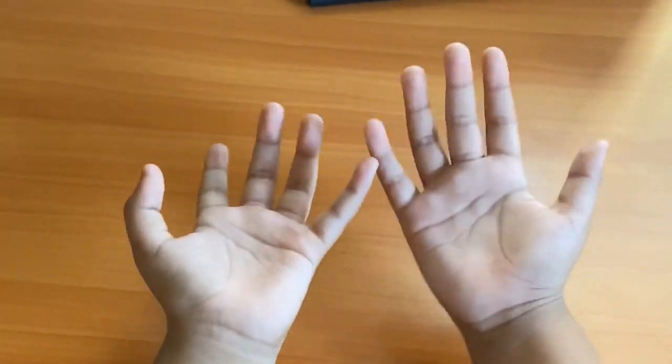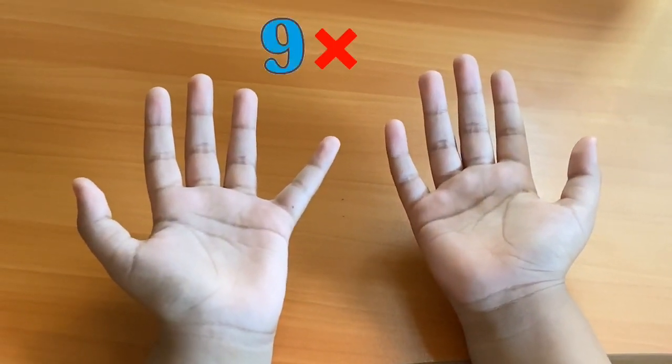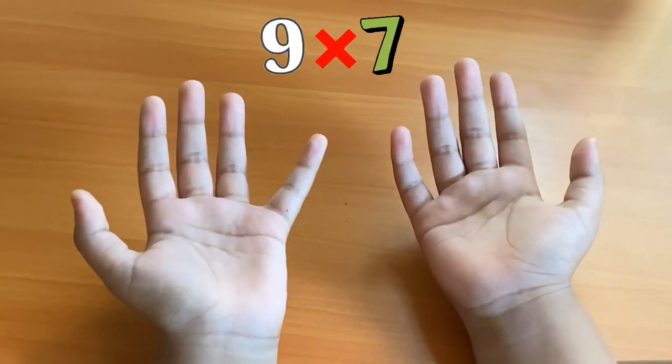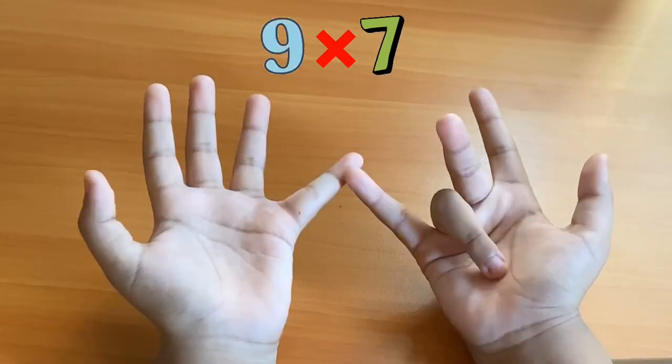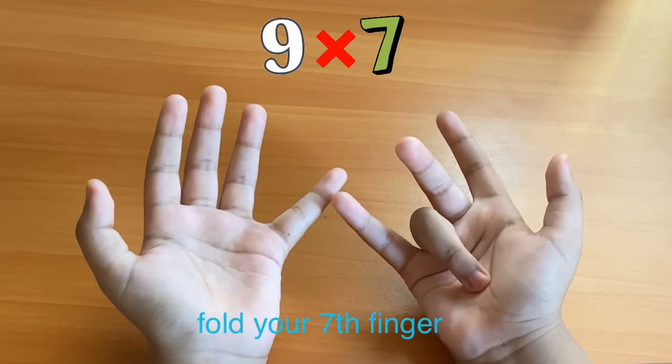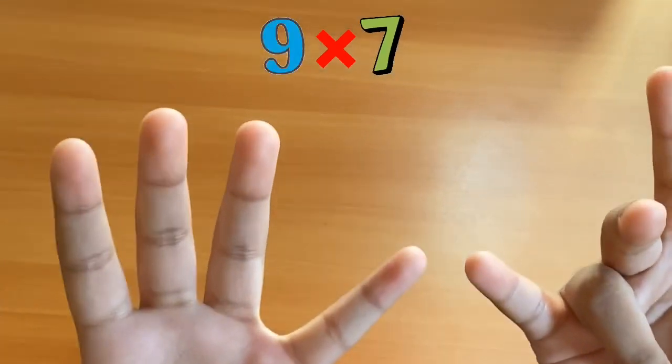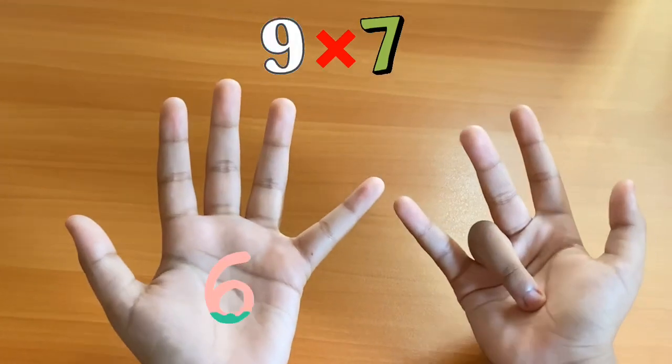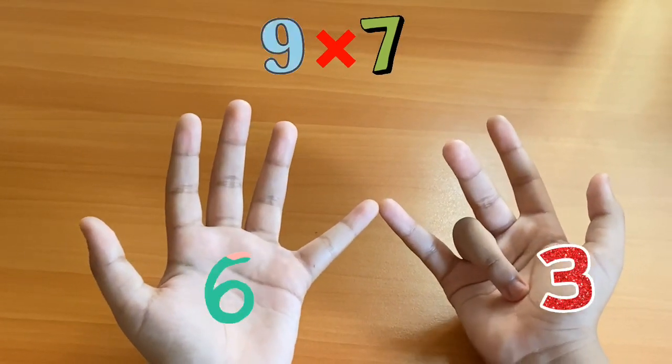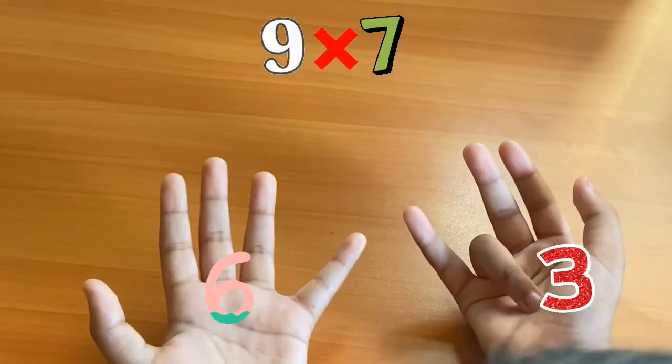The example is 9 times 7. So, where's 7 here? You have to pull your seventh finger. So, the answer is 6 and 3. 63. You need to count your fingers in the left and fingers in the right.